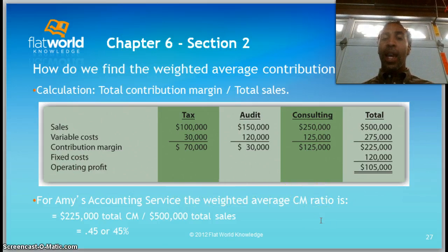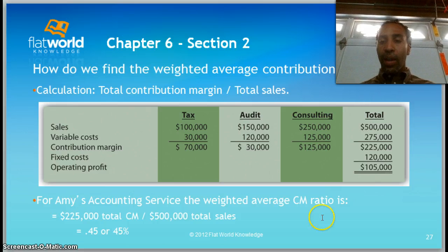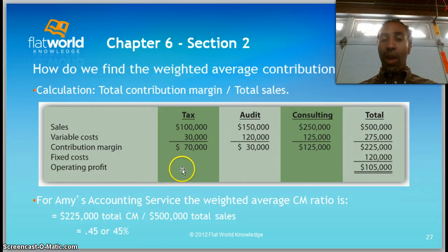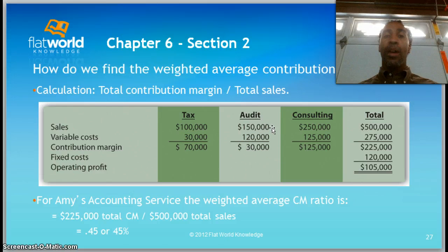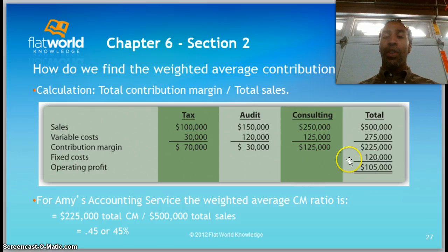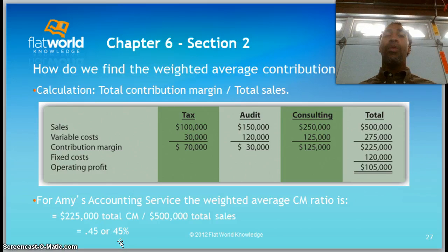For Amy's Accounting Service, the weighted average contribution margin ratio is $225,000 total contribution margin divided by $500,000 in total sales, which is 0.45 or 45%. For individual departments: Tax is $70,000 ÷ $100,000; Audit is $30,000 ÷ $150,000; Consulting is $125,000 ÷ $250,000. But the total gives us $225,000 ÷ $500,000 = 0.45, or 45% — that is your contribution margin ratio.